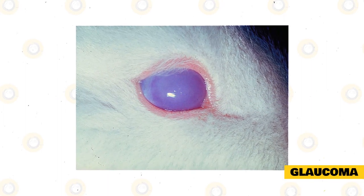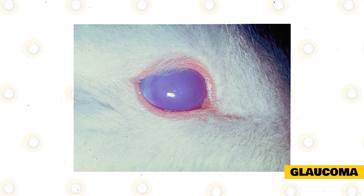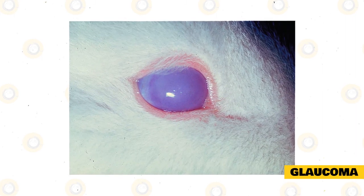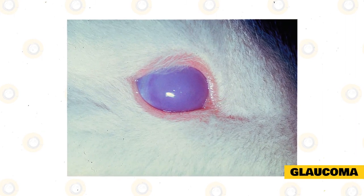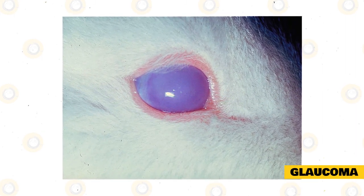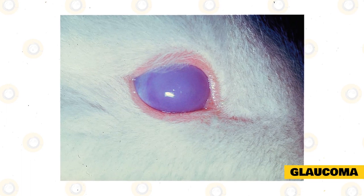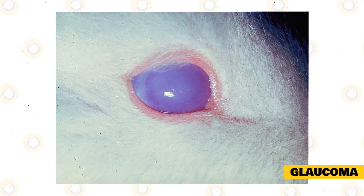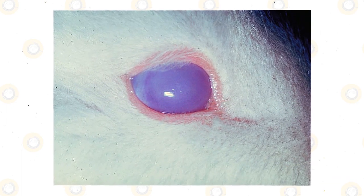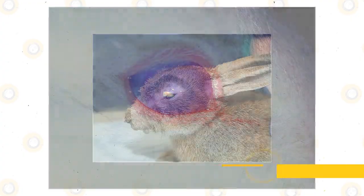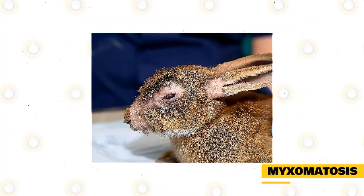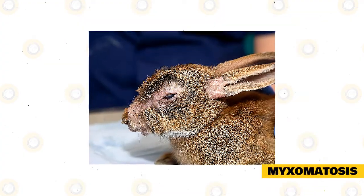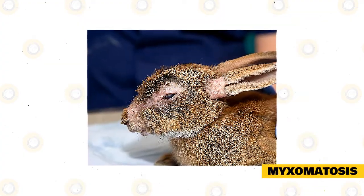Glaucoma in rabbits is inherited as an autosomal trait. It commonly happens in New Zealand rabbits between three to six months of age. Treatment of glaucoma is described as very frustrating. The early signs include blindness and generalized corneal edema.